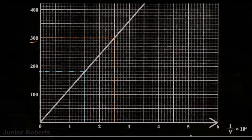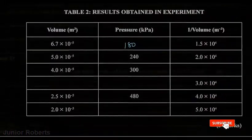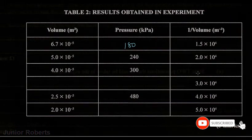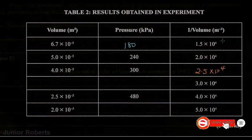And we'll see that the corresponding 1 over volume value is 2 and here is halfway, so it's going to be 2.5. So we're going to say 2.5 times 10 to the 4 per meter cubed.